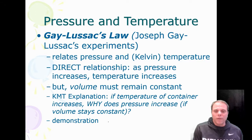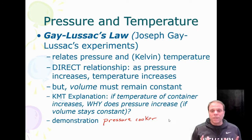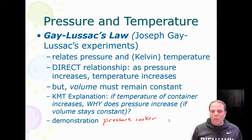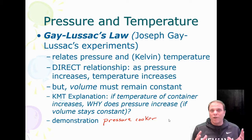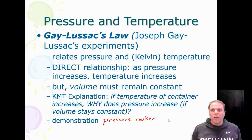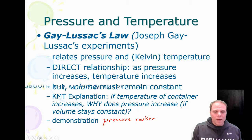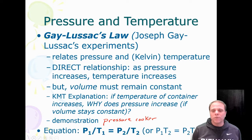This is what happens inside a pressure cooker. If you don't allow the gas to escape and you increase the temperature, you end up increasing the pressure. This is great because that pressure increases the vapor pressure, which changes the boiling point. The heat you put in keeps making the water hotter and hotter above boiling temperature, so the food in there cooks faster. The equation is P1/T1 = P2/T2.